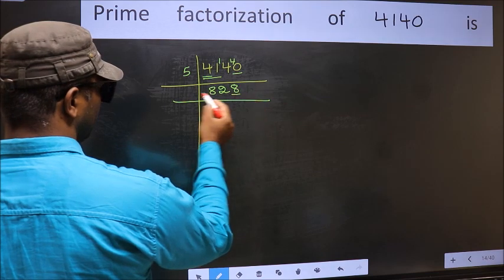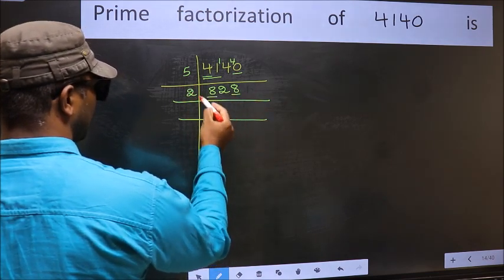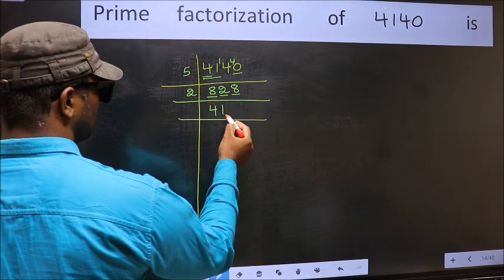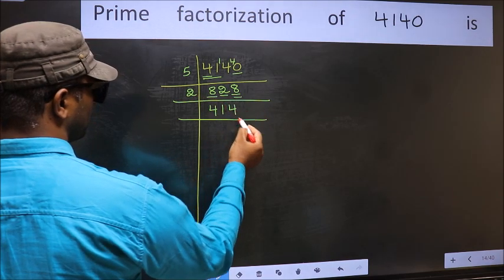Now the last digit 8 is even so take 2. First number 8. When do we get 8 in 2 table? 2×4 is 8. The other number 2. When do we get 2 in 2 table? 2×1 is 2. The other number 8. When do we get 8 in 2 table? 2×4 is 8.